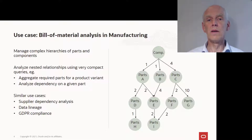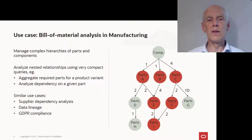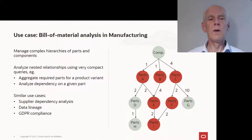Another typical use case in this domain would be to determine what would happen if a given part is not available. Just by computing all the top-level products with parts ending at that very part, you can show the impact. The same approach is applicable in many other domains as well, for example in GDPR compliance or in data lineage.